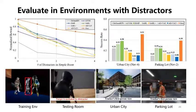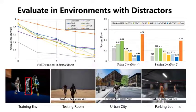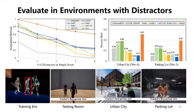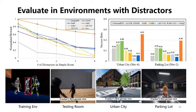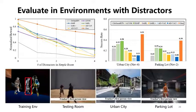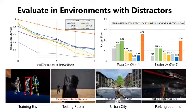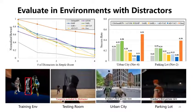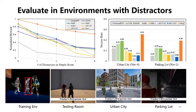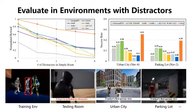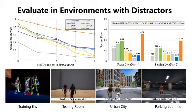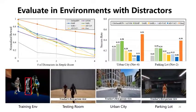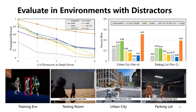In this experiment, the tracker is trained in one room with environment augmentation, then evaluated in another room with a different number of distractors. Performance of both our tracker and baselines degrades as the number of distractors increases, but our tracker shows good transferability in unseen environments such as urban city and parking lot.